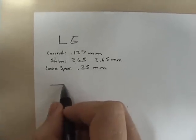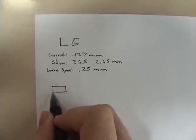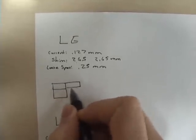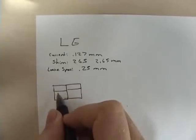The way to visualize this is you got your clearance here and then you have your shim right here.